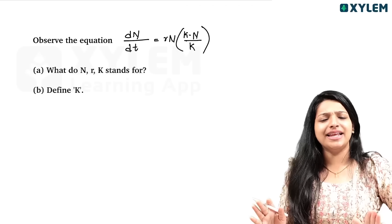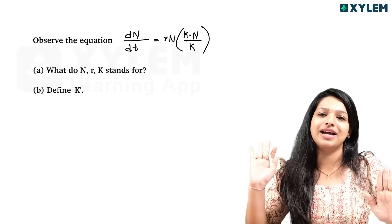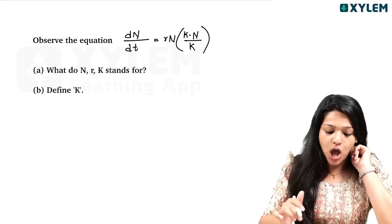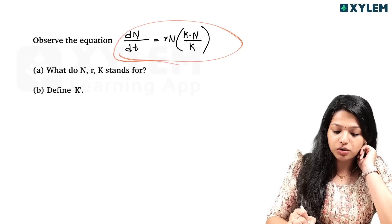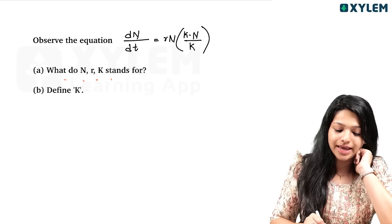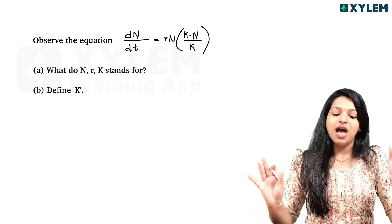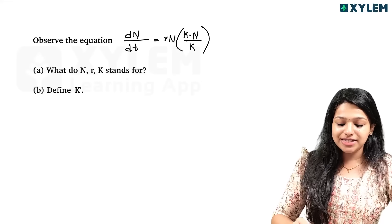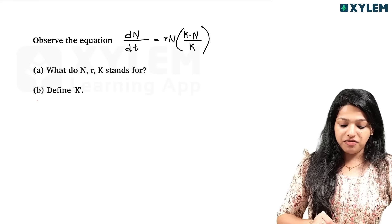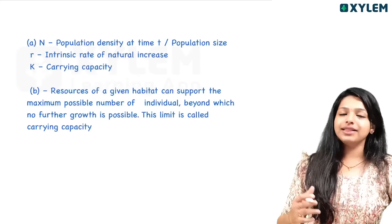Now observe the equation: dN/dt = rN × (K - N) / K. What do N, r, and K stand for? Define K. We will study this equation carefully and identify what each variable represents.